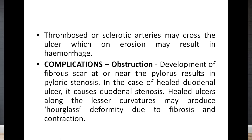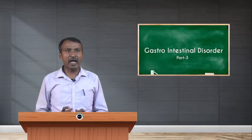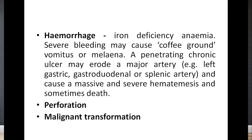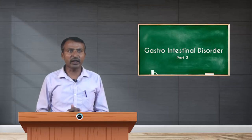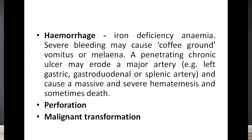Complications of peptic ulcers include obstruction — development of fibrous scar at or near the pylorus results in pyloric stenosis. In the case of duodenal ulcers, it causes duodenal stenosis. Ulcers along the lesser curvature may produce hourglass deformity due to fibrosis and contraction. Hemorrhage is another complication that may lead to iron deficiency anemia; severe bleeding may cause coffee-ground vomitus or melena — blood in the stools, making them tarry dark black in color.